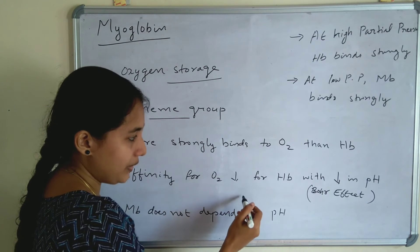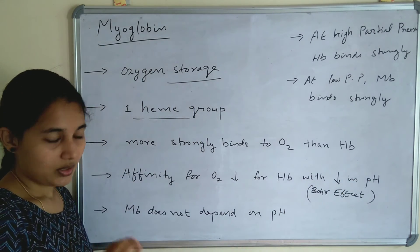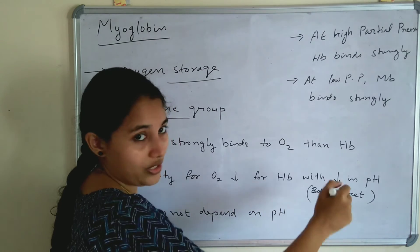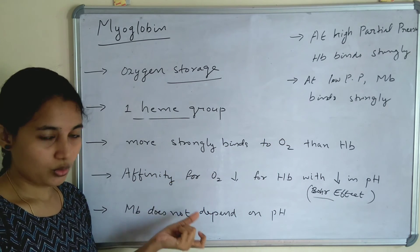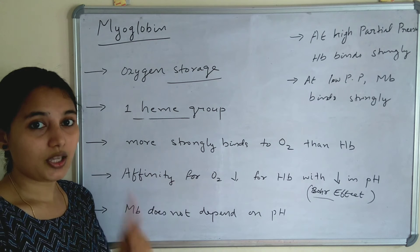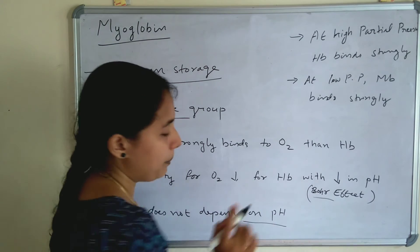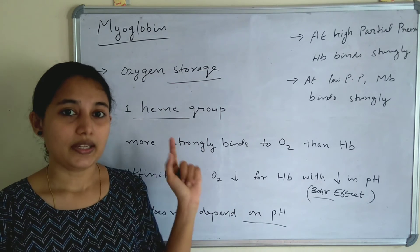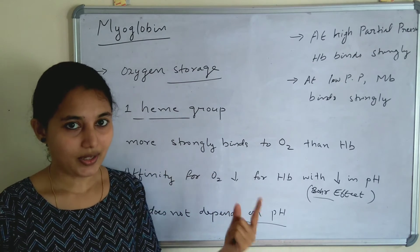The affinity for O2 decreases for hemoglobin with a decrease in pH — this is called the Bohr effect. When pH decreases, the affinity for O2 also decreases in hemoglobin, and that is called the Bohr effect. But in myoglobin, it does not depend on pH. In the deoxy form, pH is low so affinity for oxygen is also low, while in the oxy form pH is high so affinity is also high.